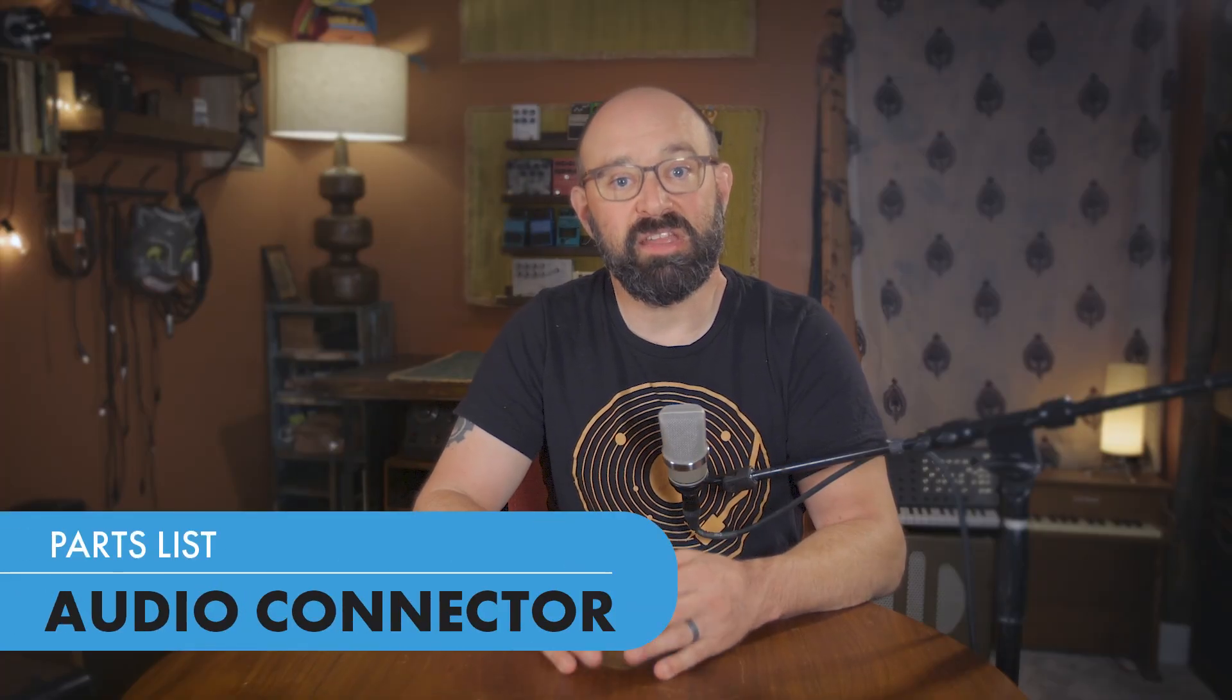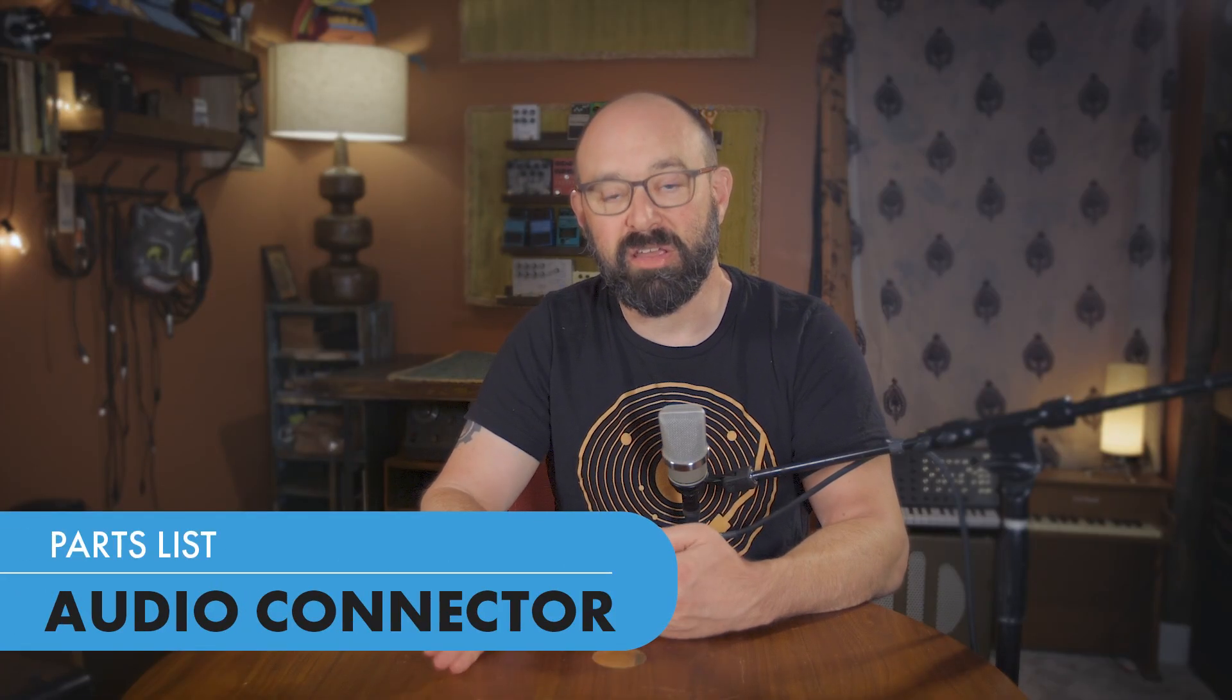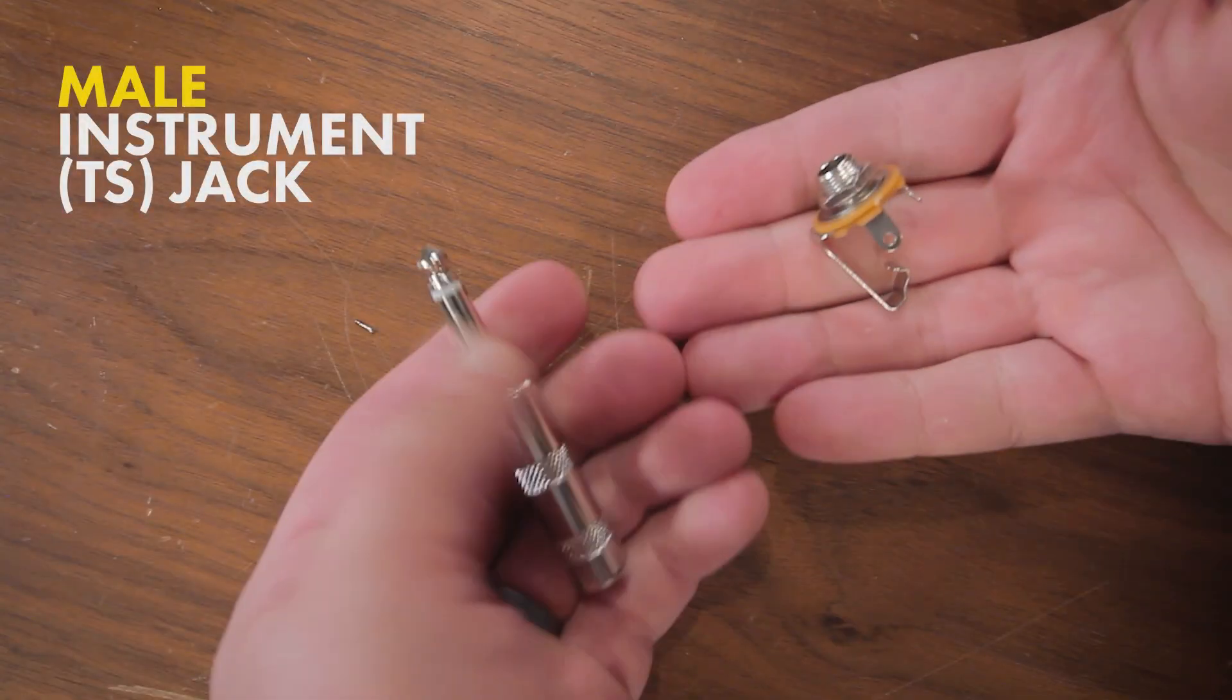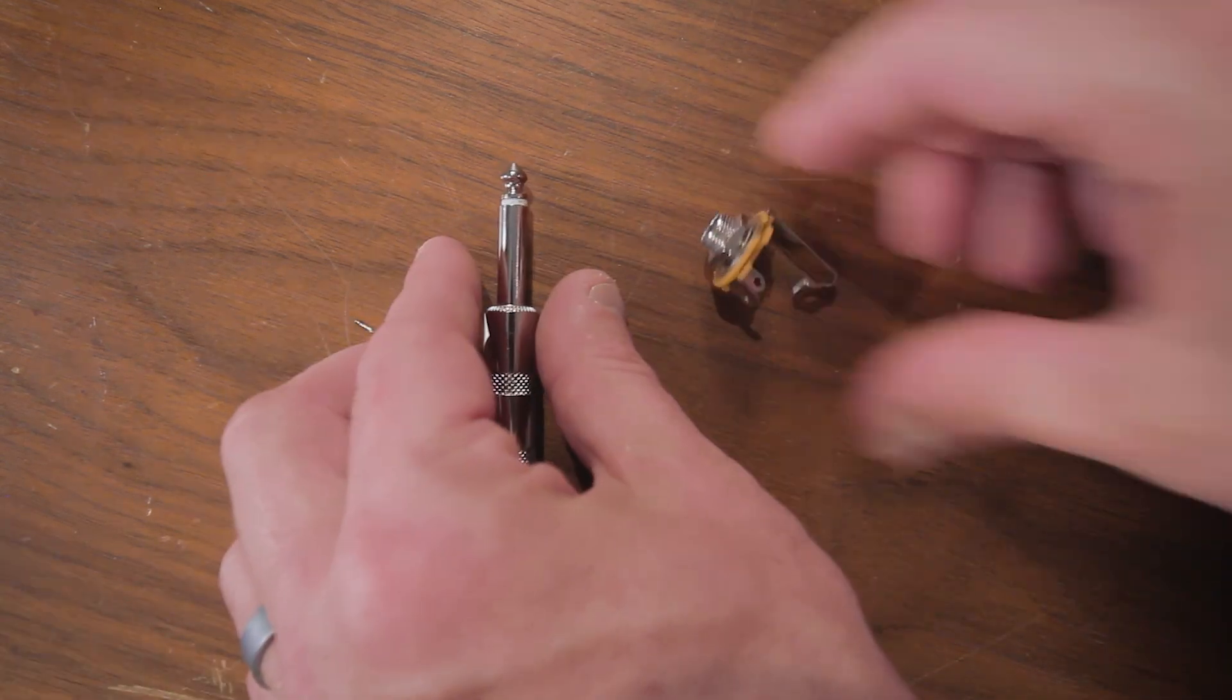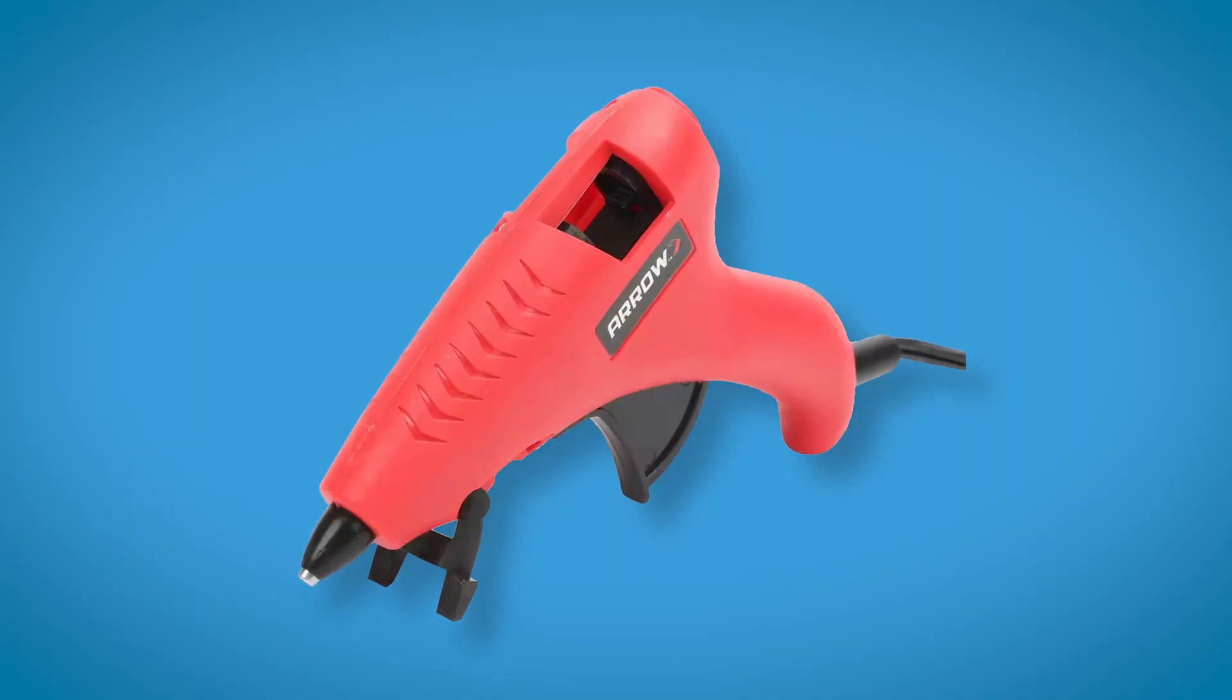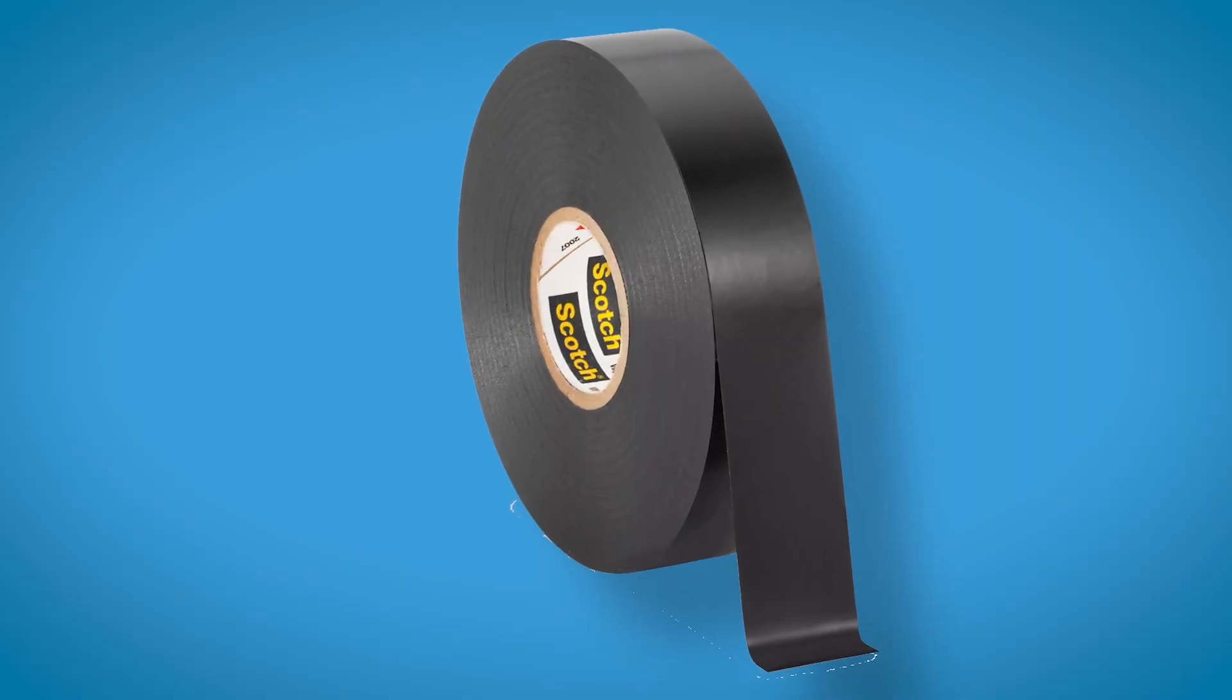And finally, you need a way to get the audio from your contact microphone into your amplifier or recording device. And just like with most of the other supplies, there are a lot of options depending on your preference. Now I'm going to show you how to solder up connectors like these. This is a male instrument jack and a female instrument jack. And you can decide which one works best for your needs. The only tool that you'll need for these is a basic soldering iron. And it's also helpful if you happen to have a hot glue gun and or some electrical tape.